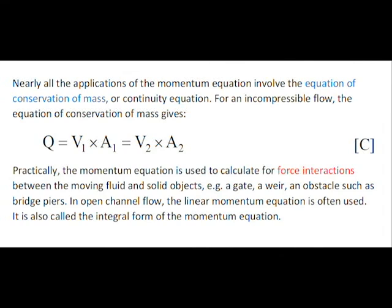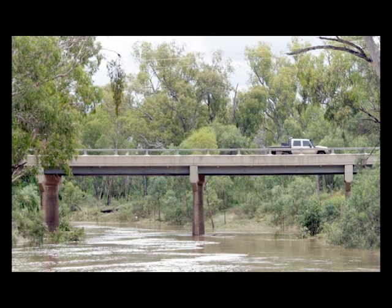For example, a gate, a weir, an obstacle such as bridge piers—here a bridge over the Kondaman River in Australia. In one-dimensional flow, the linear momentum equation is often used. It is also called the integral form of the momentum equation.